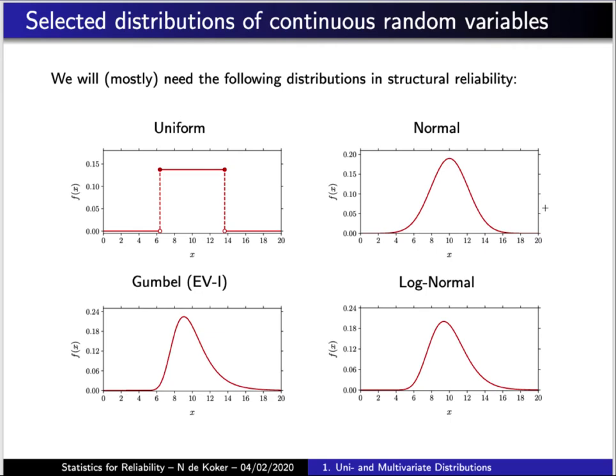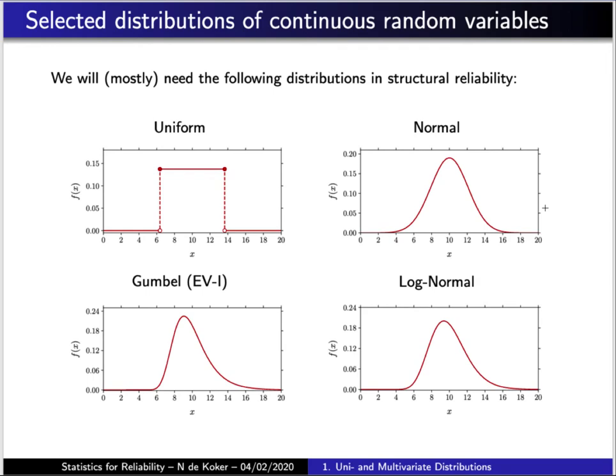In the reliability theory we will explore, we will most often use four distribution types: uniform, normal, log-normal, and the Gumbel or extreme value type one distributions. Other distributions do appear in reliability analysis, but for this series of lectures these will be sufficient. Most of this material should be fairly familiar, so it is only intended as a quick review or reference.